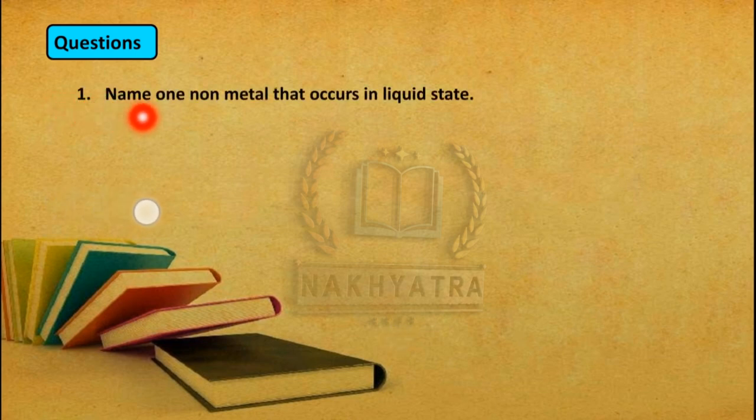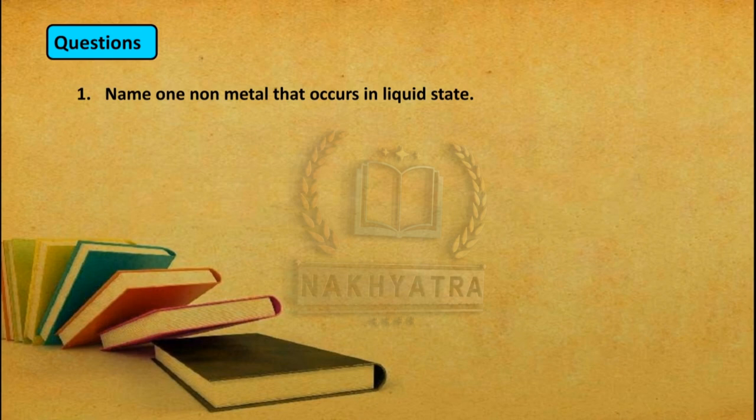Question number 1: Name one non-metal that occurs in a liquid state. We have studied that it is bromine — bromine is the non-metal that occurs in liquid state. All non-metals either exist as solid or gas, but bromine is the only exception.